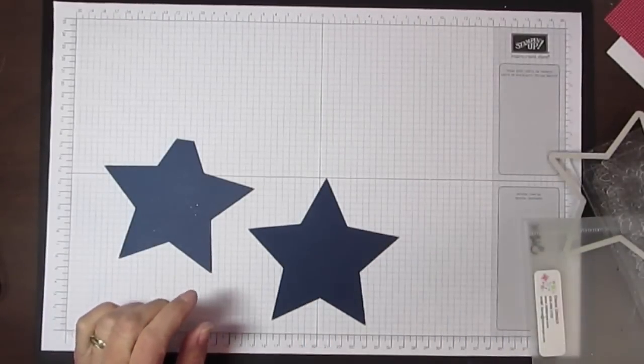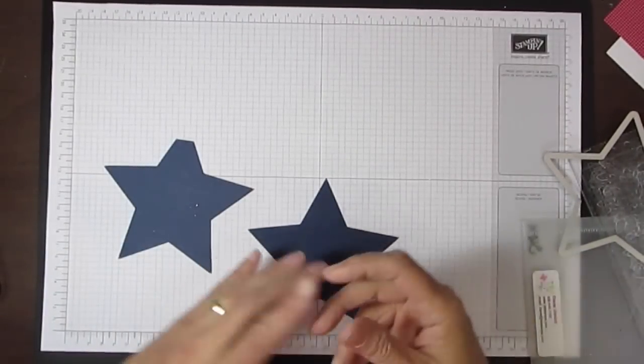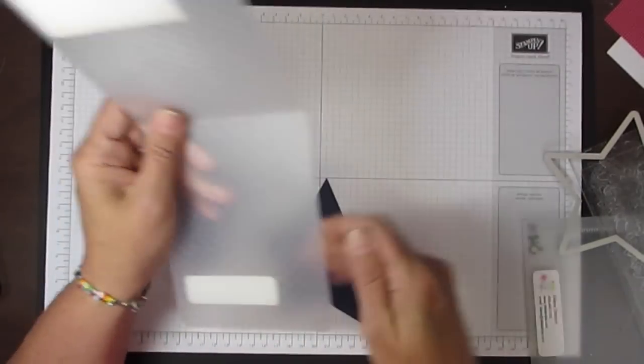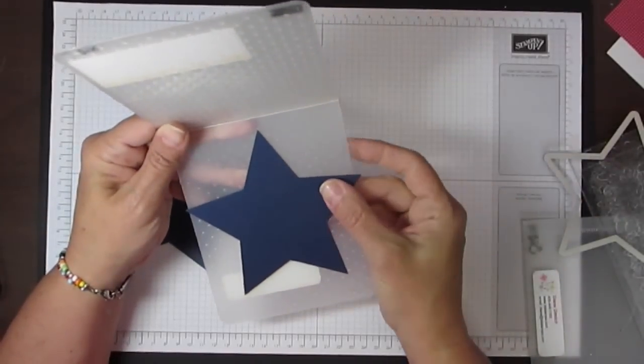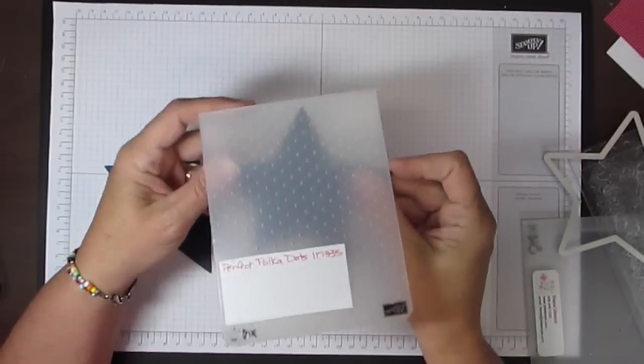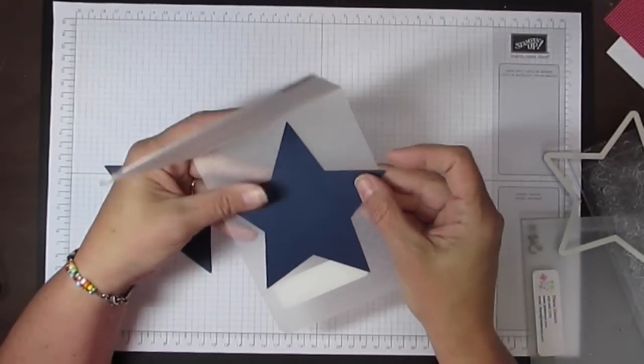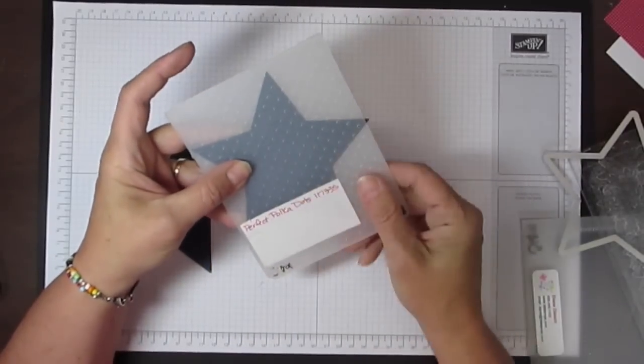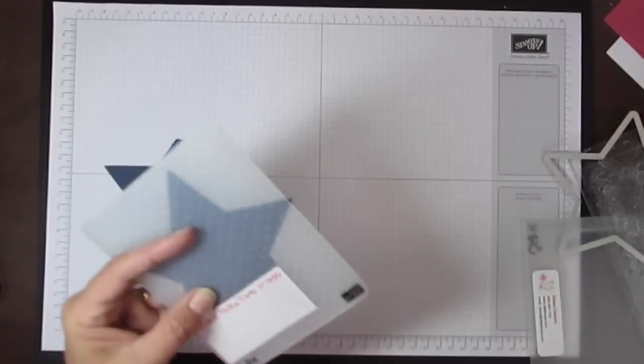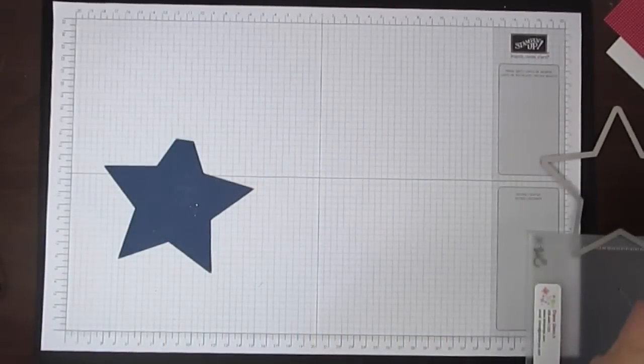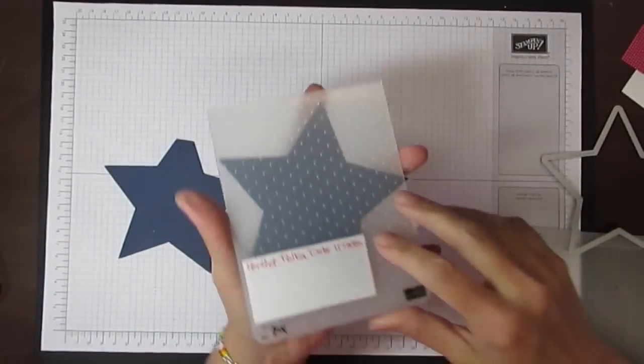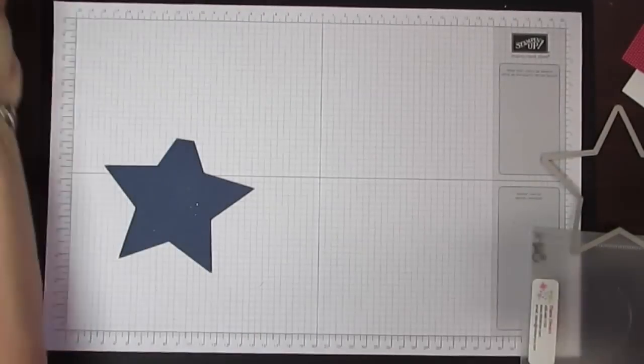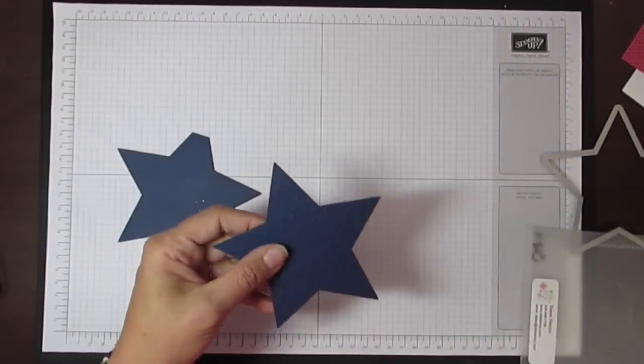To emboss, I'm going to take one of my embossing folders, and this one is the perfect polka dots embossing folder. Any of the embossing folders will work. This is just slightly—you can see one tip is going to be off, but that's alright because the stars are kind of random so it doesn't matter. Then I'm going to put these through my big shot, and once I've done that, I have an embossed star.